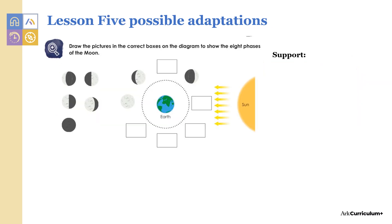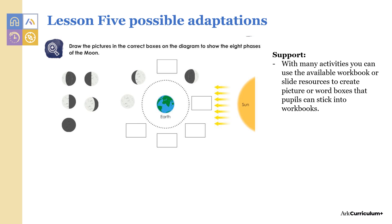In lesson five, pupils are asked to draw the phases of the moon using the images on the left-hand side into the diagram. Support pupils by copying and printing the phases of the moon to be stuck in. This could be done using the workbook or slide resources and is a method that could be used for many other activities also. To support pupils further you could also add more moons to the diagram already.